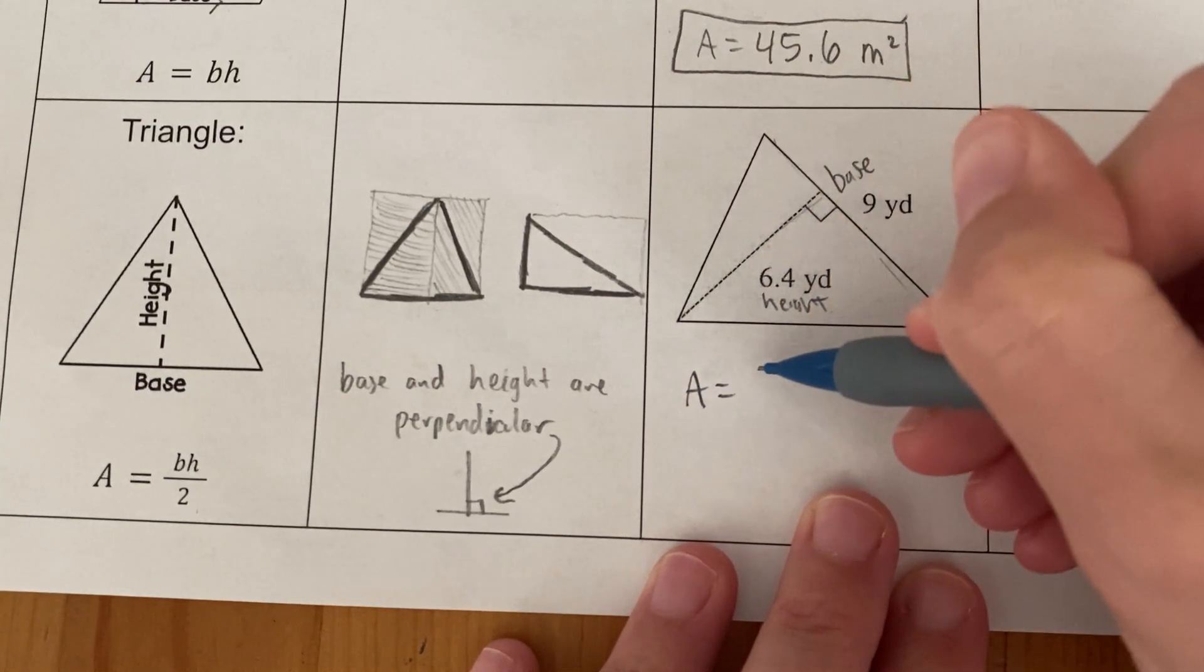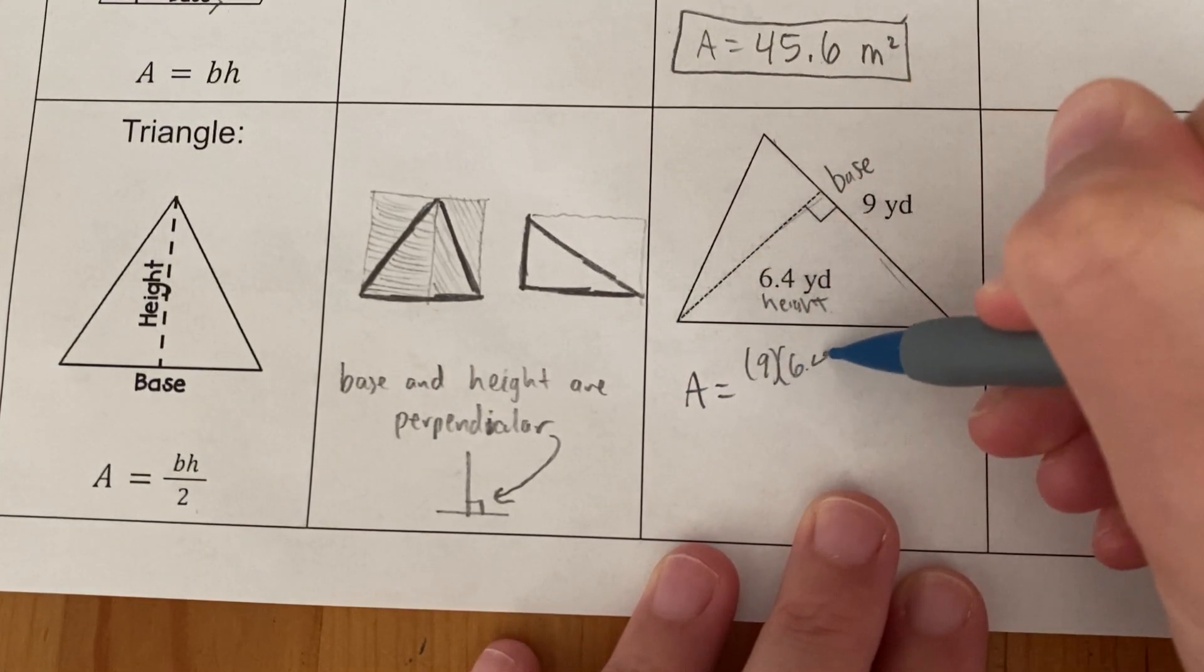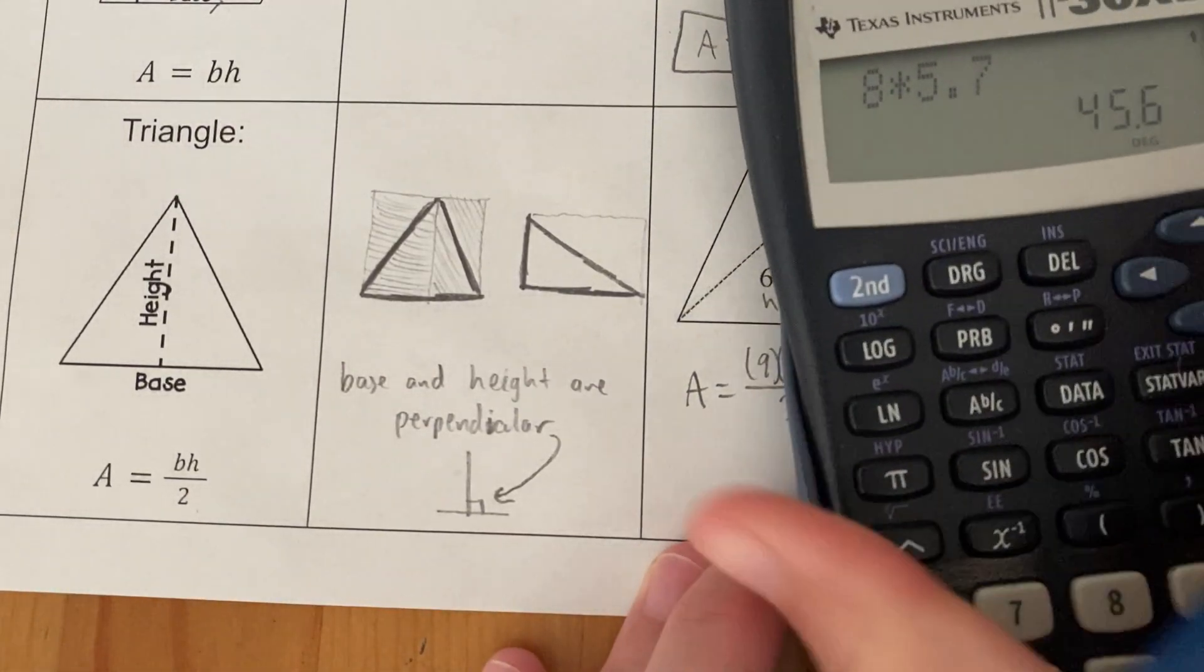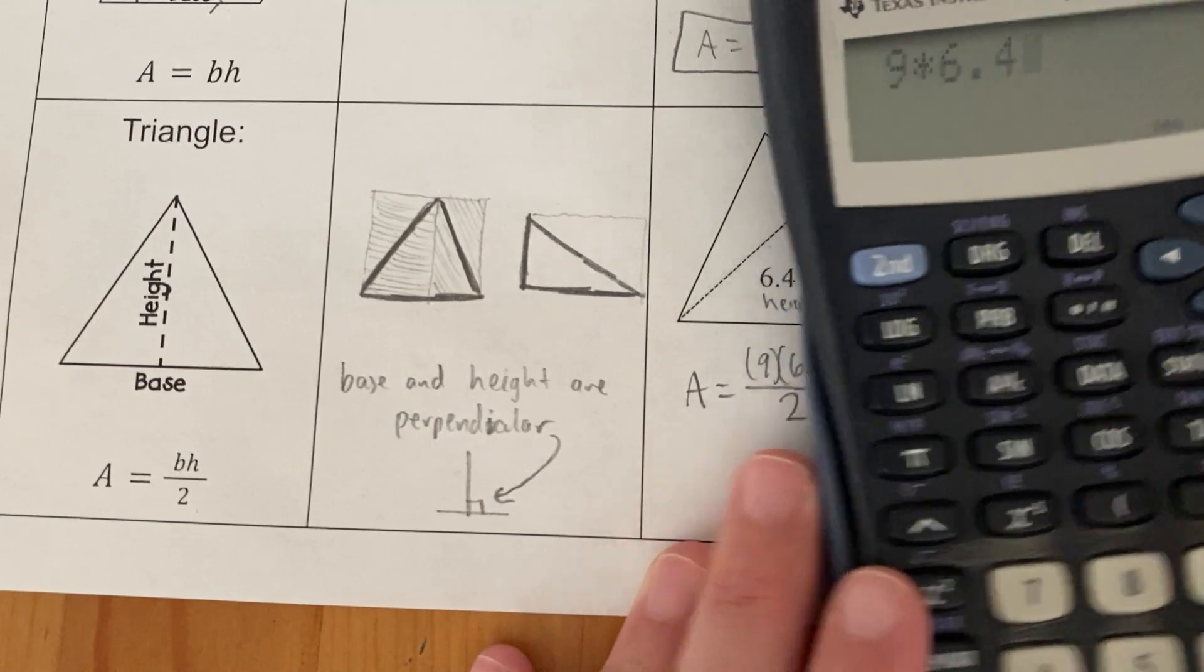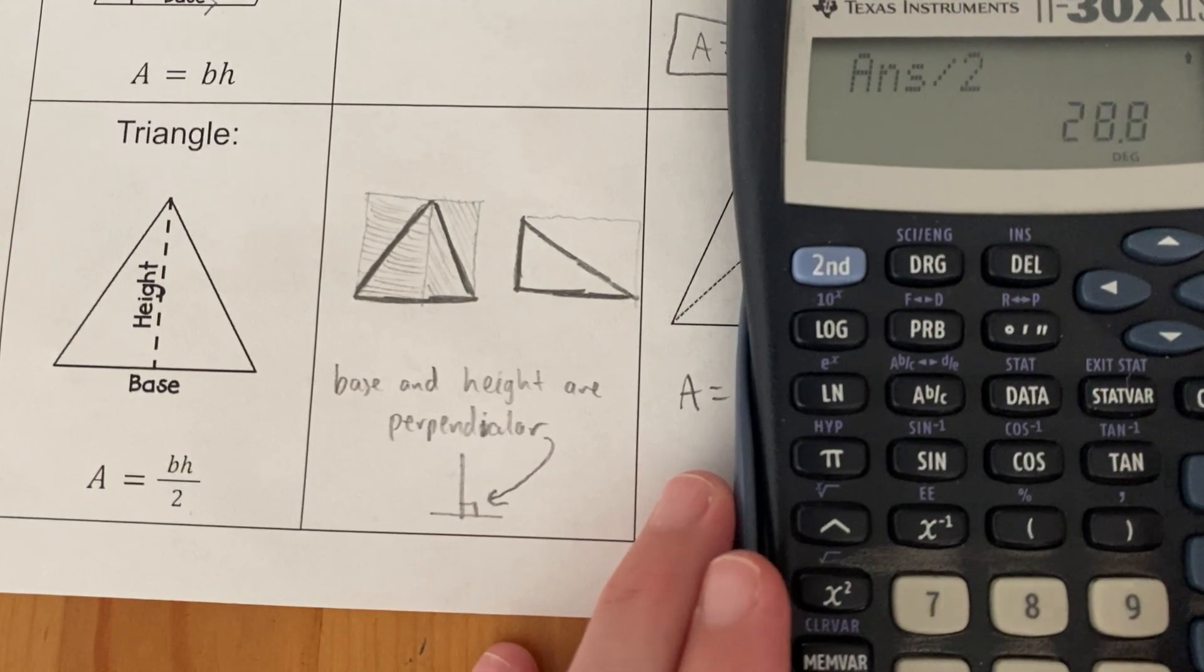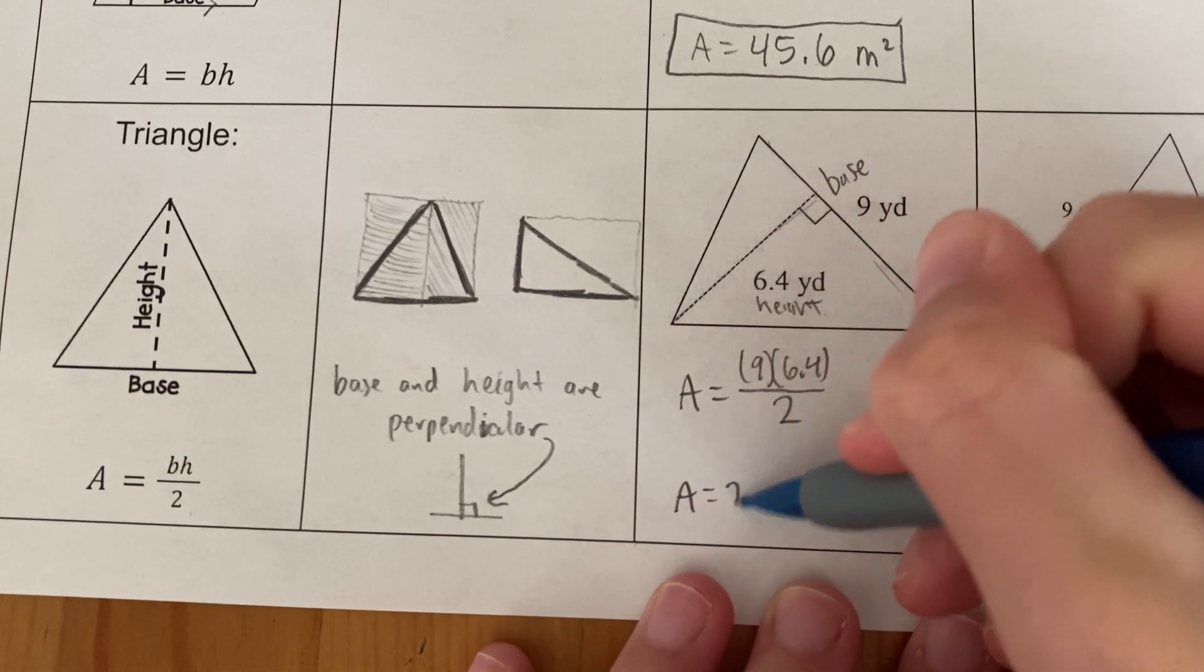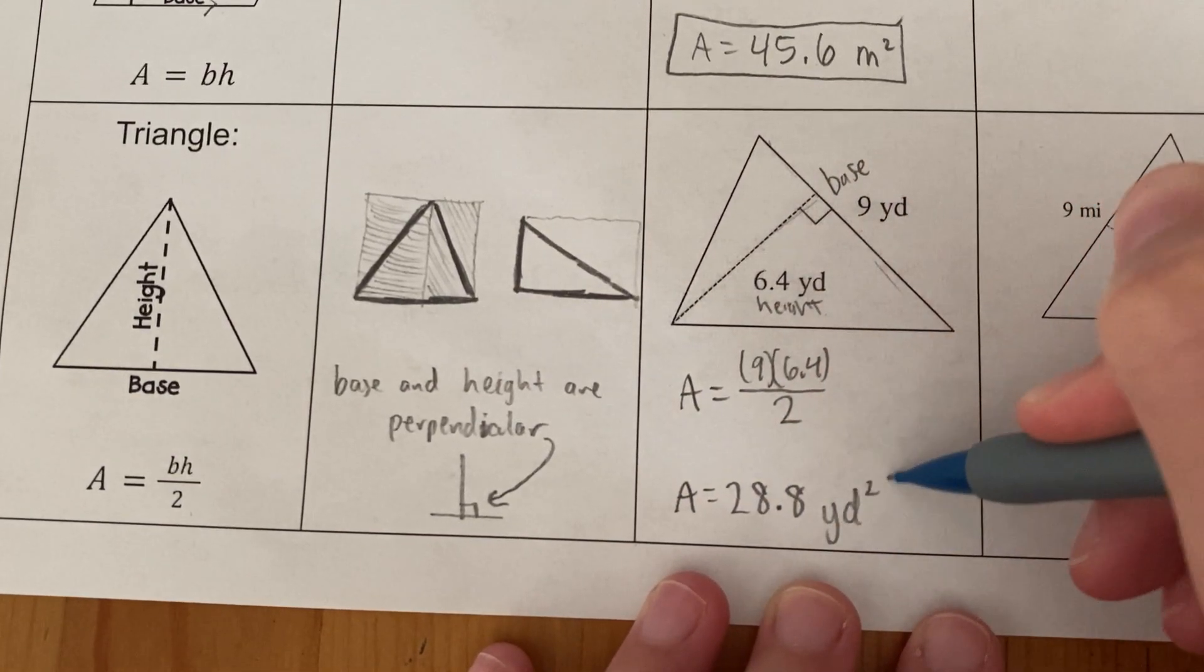So the area would be the base, nine, times the height, 6.4, over two. And in your calculator, you can just do that all as one step. So that's nine times 6.4. You can press enter here and then divide by two, or you can just divide by two, it doesn't make a difference. 28.8. So in this case, my area is 28.8 square yards.